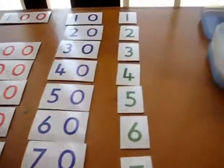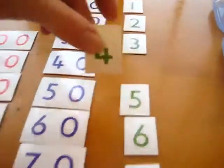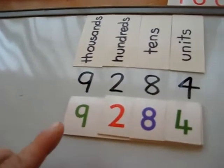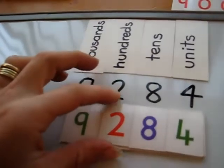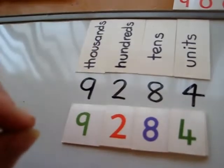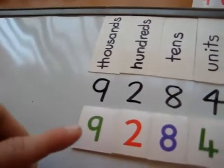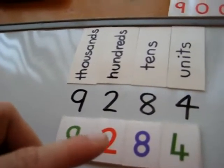And what's our unit? 4. So he finds the 4, and he puts it on top. And this helps him to read it by the different colors. By putting it together, he actually visualizes. Okay, it's not just 9,284. It's 9,000, 200, 80, 4.